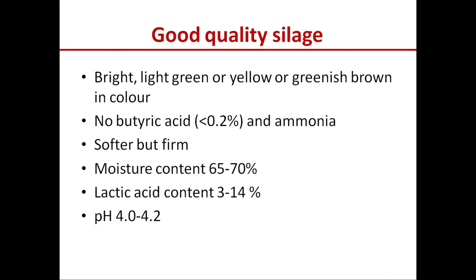What are the qualities of good silage? The color should be bright light green, yellow, or greenish brown. There should be no butyric acid, or if present it should be less than 0.2 percent, and no ammonia. The silage should be soft but firm. Moisture content should be 65 to 70 percent, lactic acid content 3 to 14 percent, and pH 4 to 4.2.